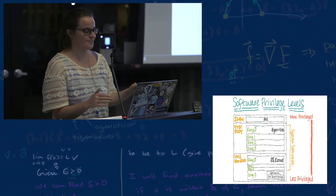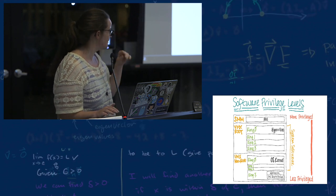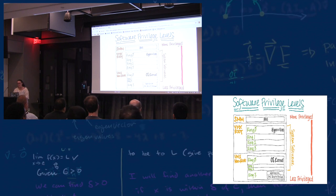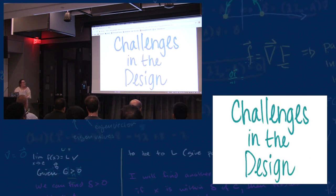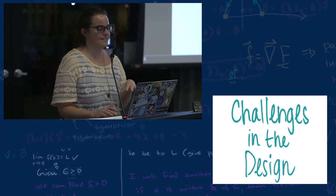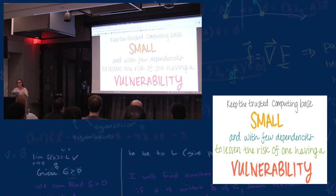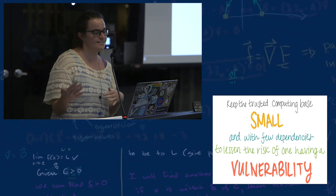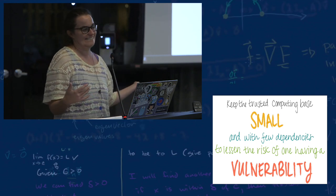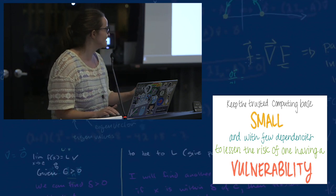This is what the software privileged levels look like in the cloud, going from more privileged to less privileged. You have BIOS at the lowest, then hypervisors, OS kernel, your application, and the SGX secure enclave would be in the less privileged section. If everything's in the sandbox, then there really isn't a sandbox.